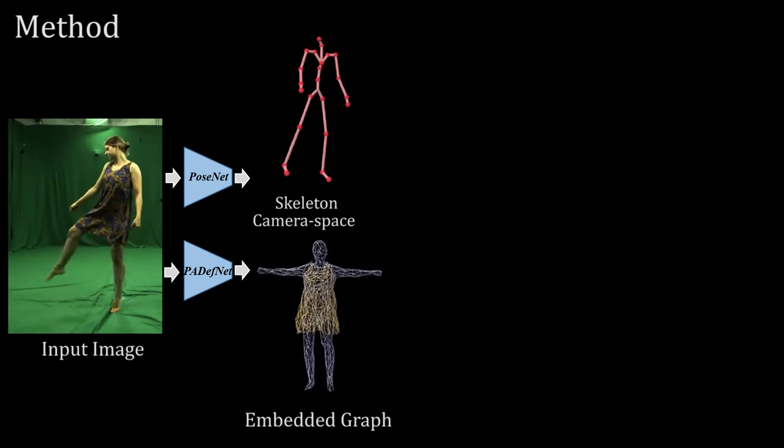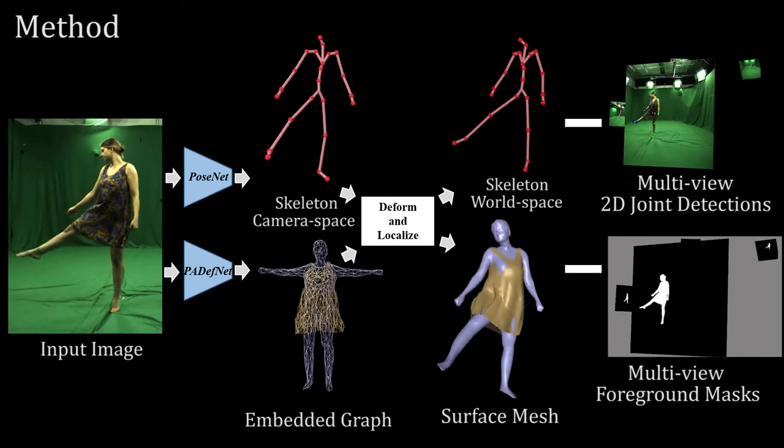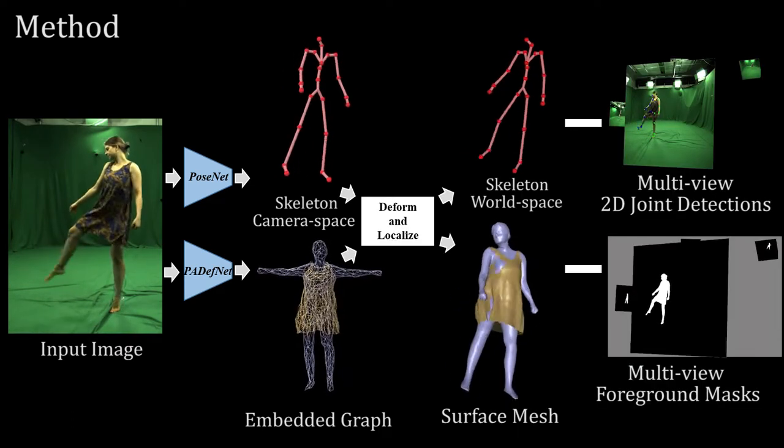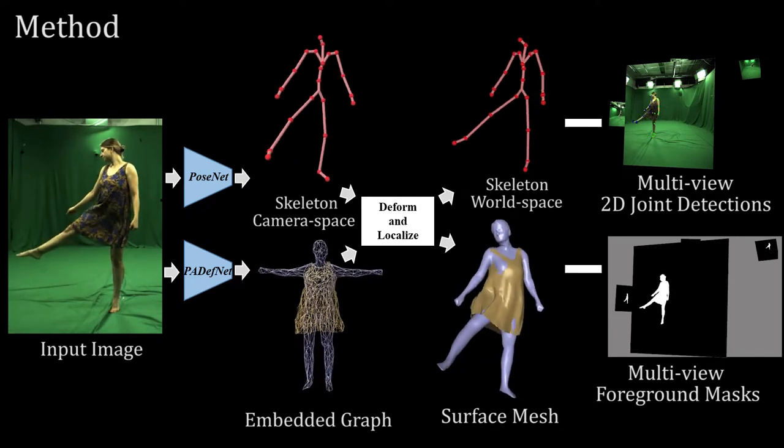Combining the outputs of the two networks allows posing and deforming the body and clothing geometry. We use a multi-view 2D landmark loss to supervise the skeleton and a multi-view silhouette loss to densely supervise the surface.